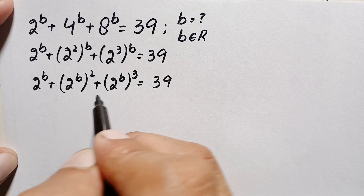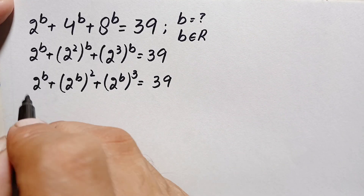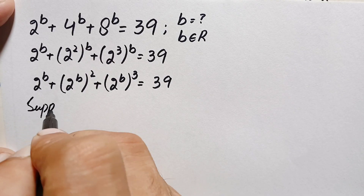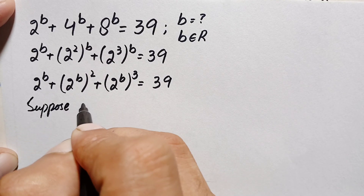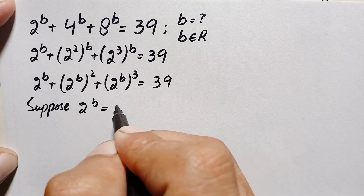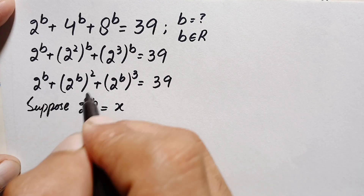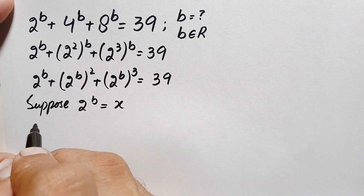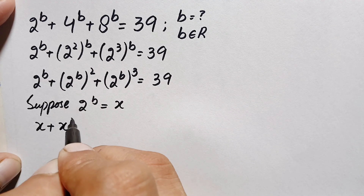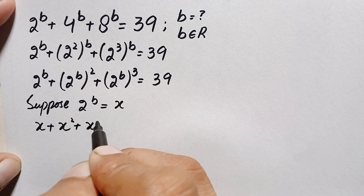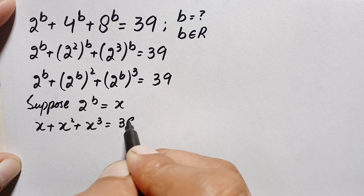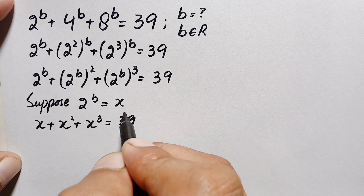Since the base 2^b is the same in all terms, we make a substitution. Let x equal 2 raised to power b. The left hand side becomes x plus x squared plus x cubed equals 39.